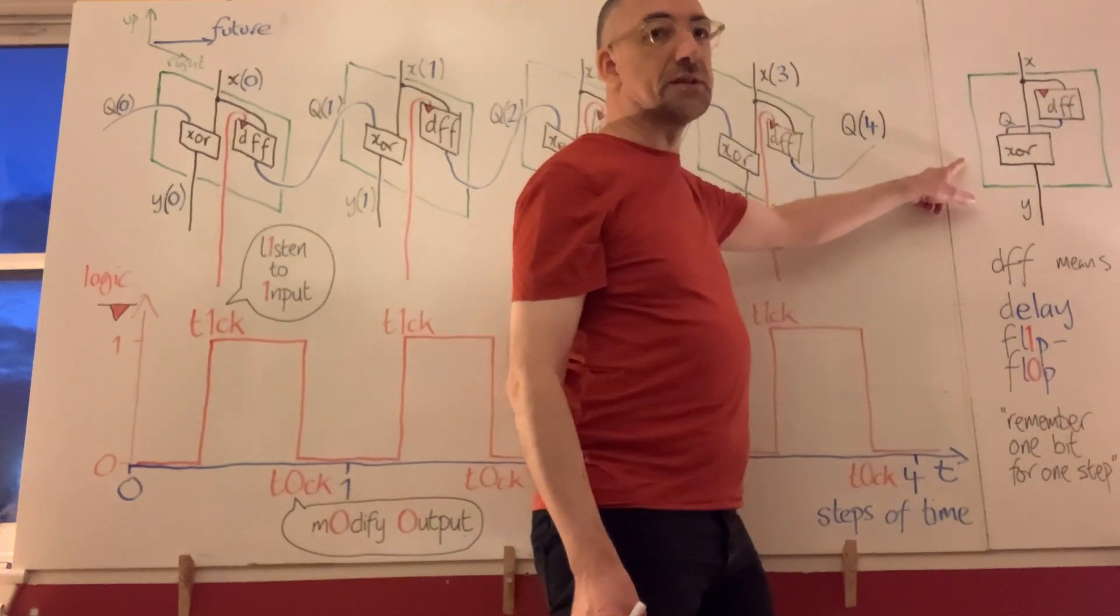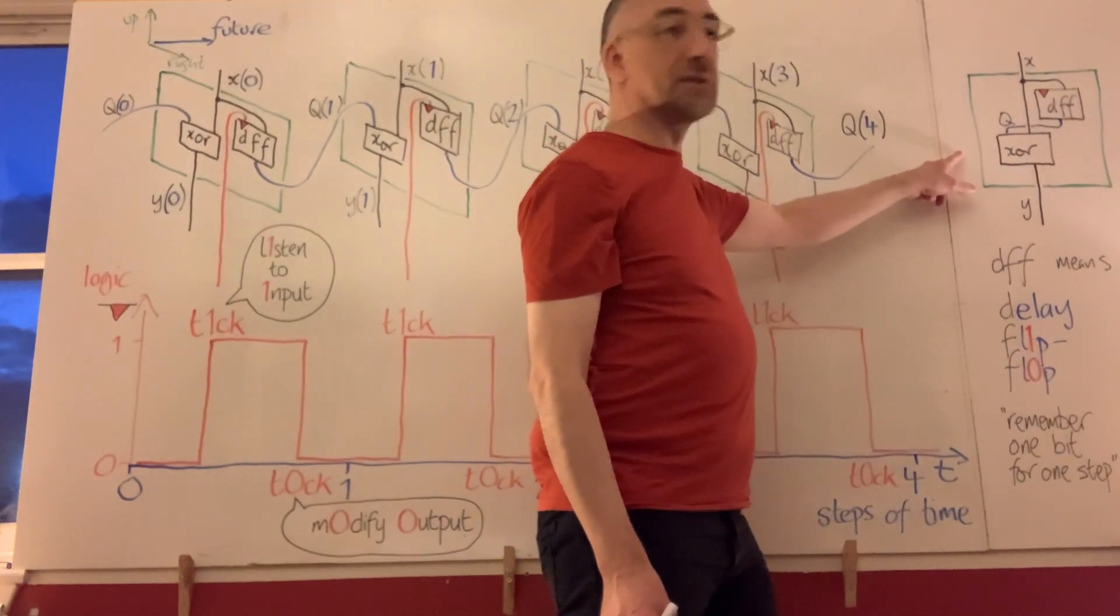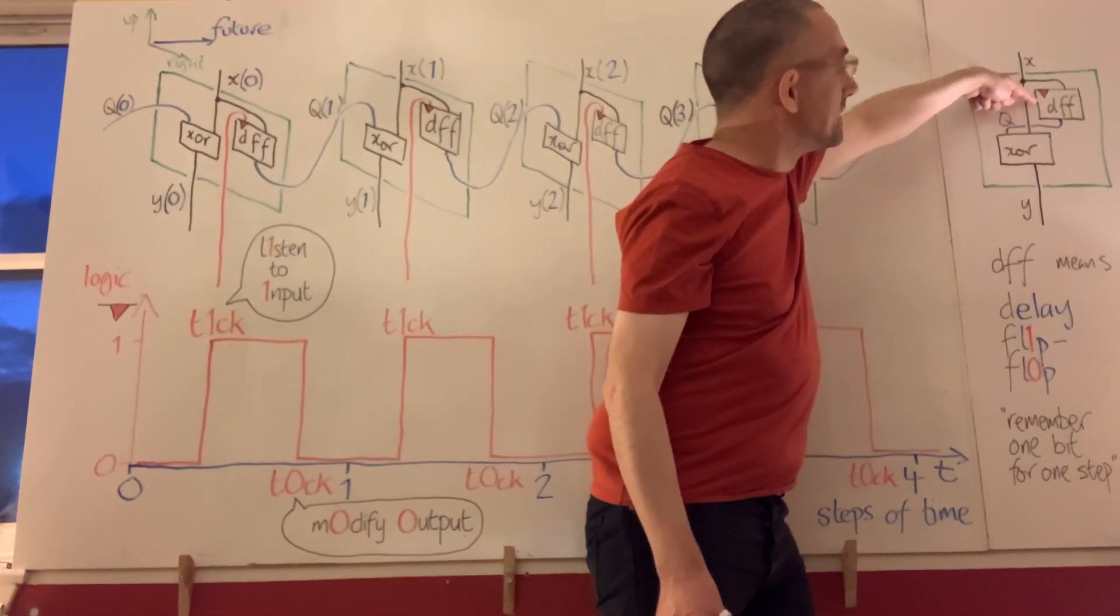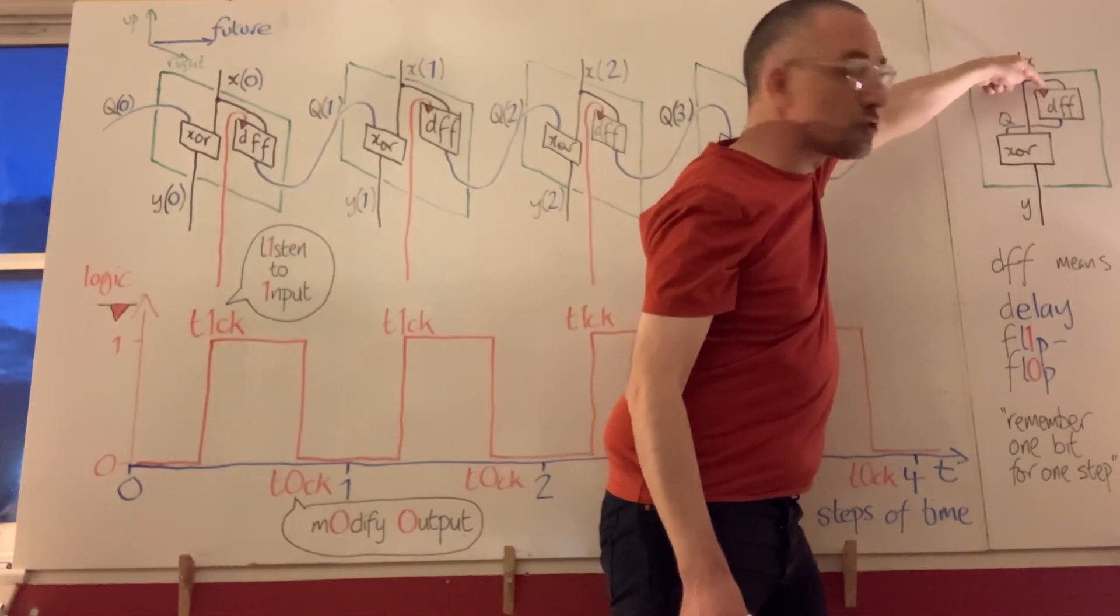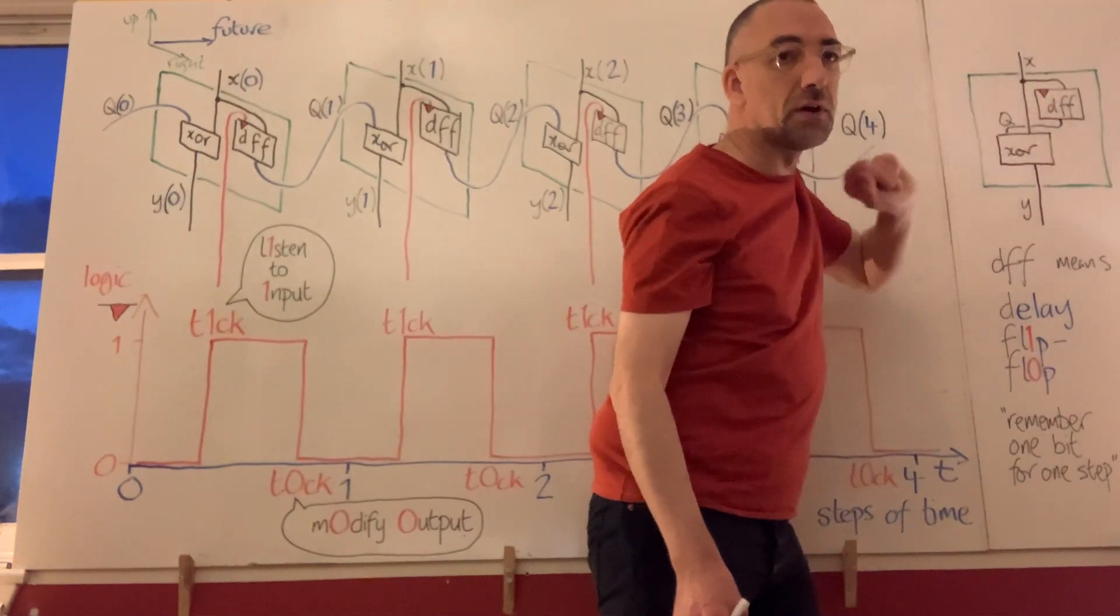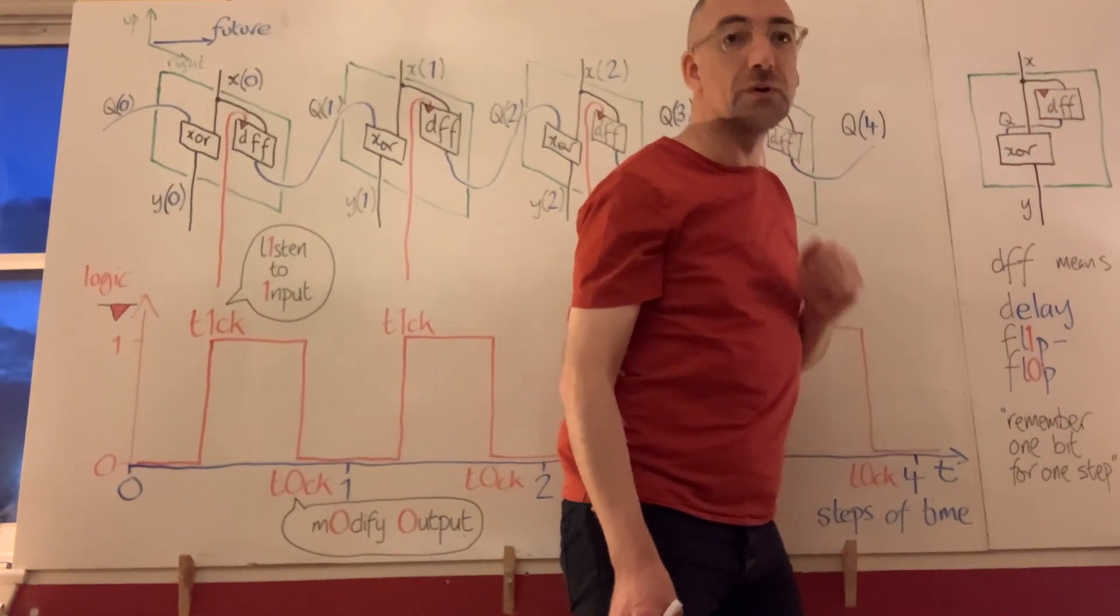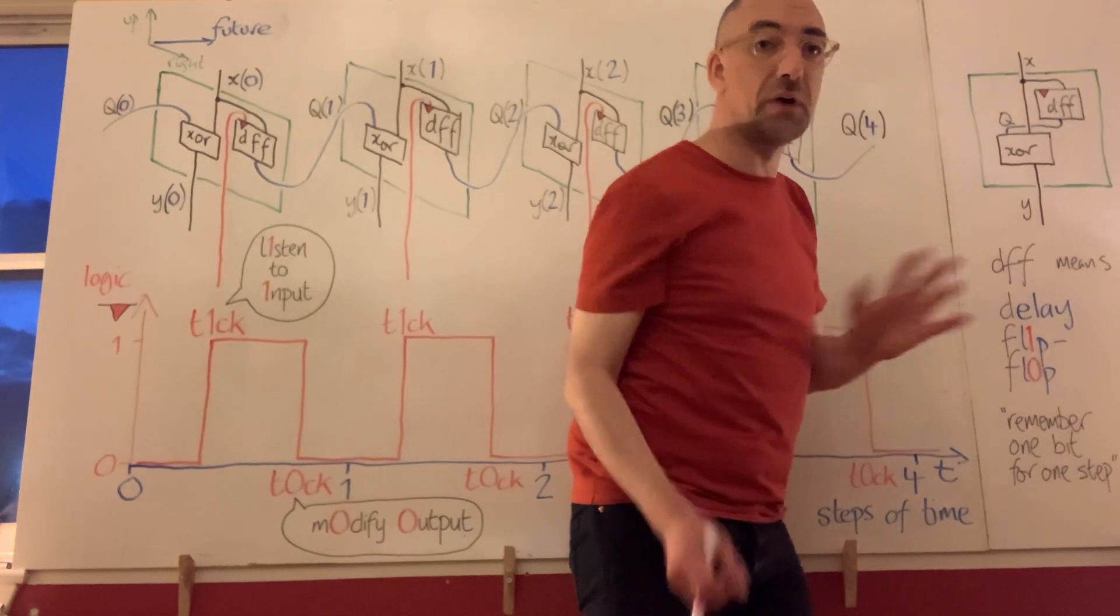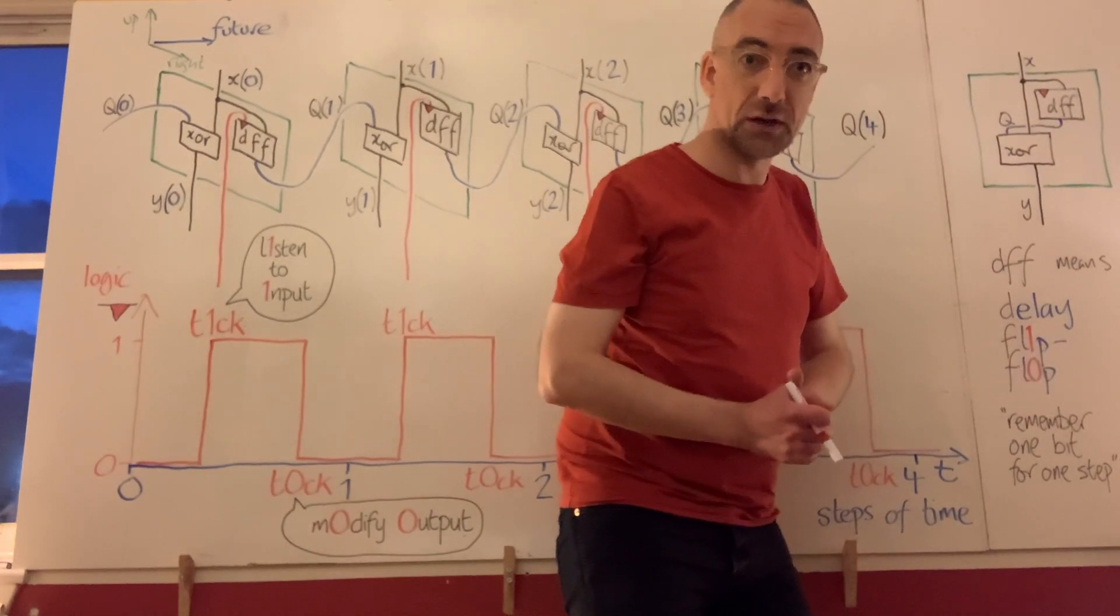So here's our circuit diagram for that difference detector and here's our D flip-flop in situ with this little triangle in the top of the component diagram which indicates that the D flip-flop is controlled by a clock. What's a clock?